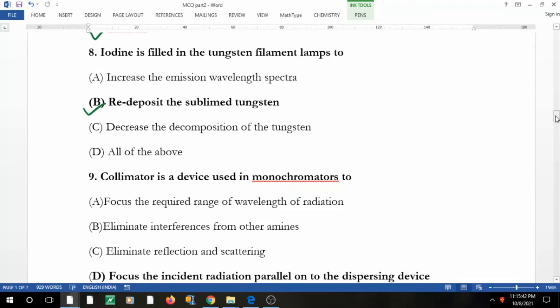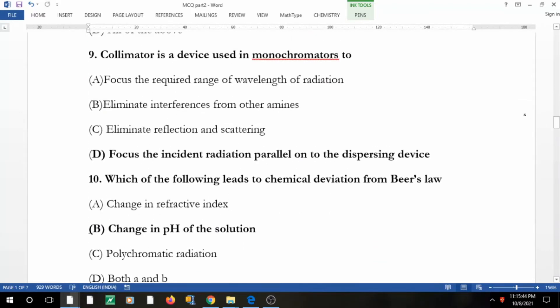Coming to the next one: collimator is a device used in monochromators. I hope you remember in the last video I said you have entry slit, then defraction grating, then exit slit. The role is to focus the incident radiation parallel on the dispersing device.